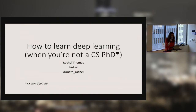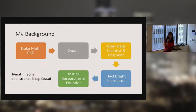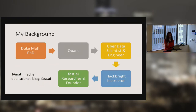How to learn deep learning when you're not a computer science PhD — or even if you are. I'm Rachel Thomas. I'm on Twitter at math_Rachel, and I blog about data science at fast.ai. My background is I studied math and computer science in undergrad and then did a PhD in pure math. I worked as a quant in energy trading for two years, and then I was a data scientist and back-end engineer at Uber.